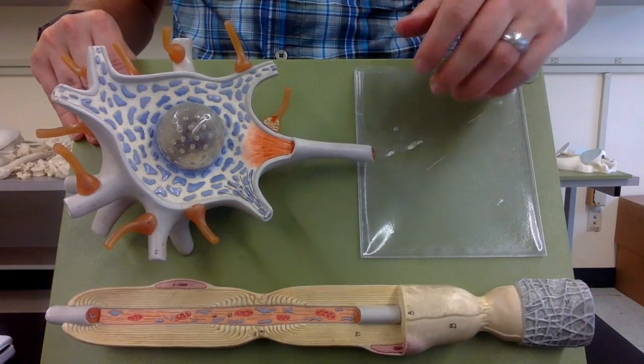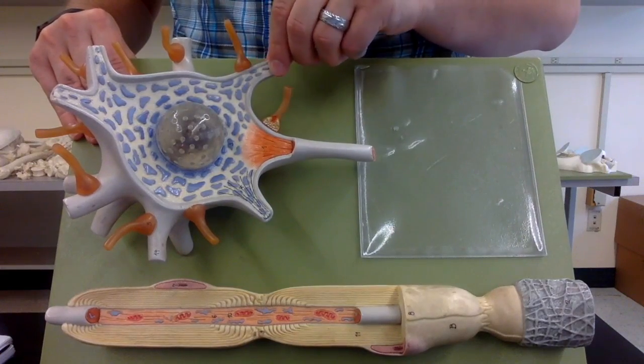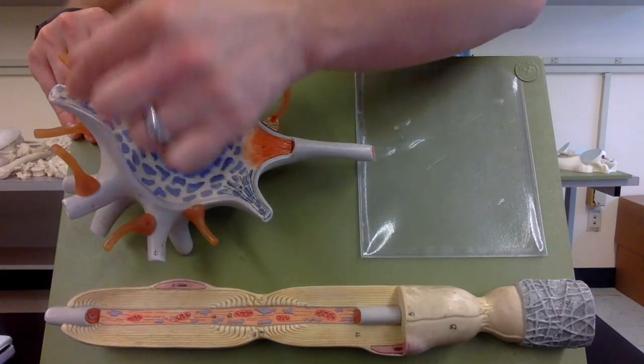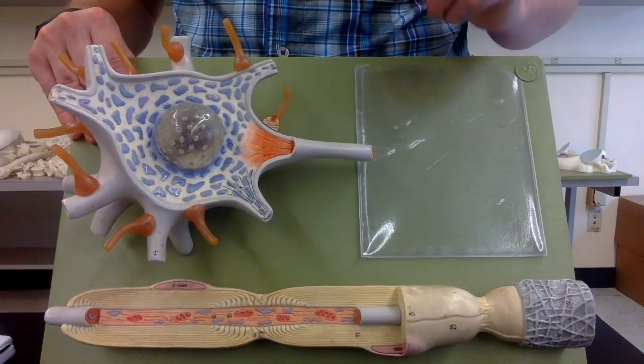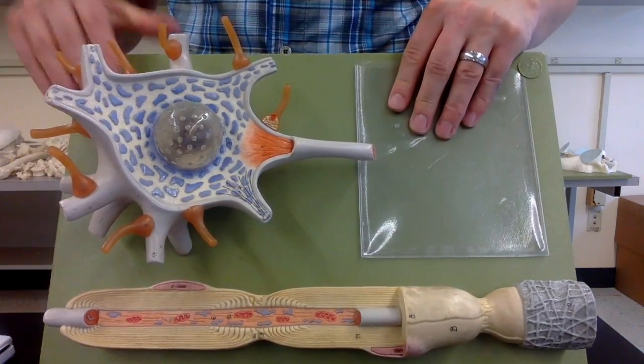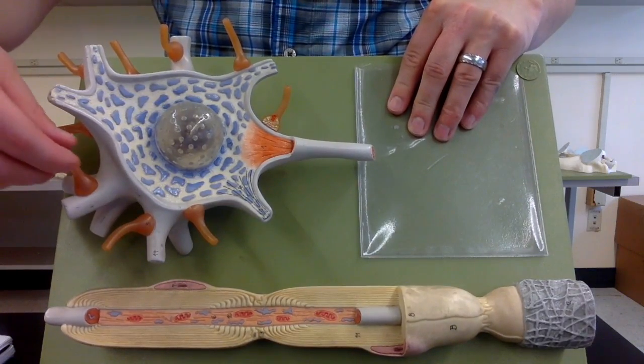These gray structures that are coming off of the cell body you can see here are dendrites. Those are receiving signal from the previous neurons.